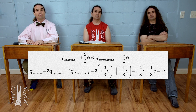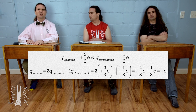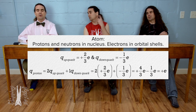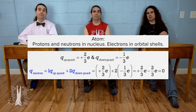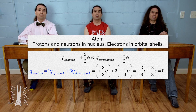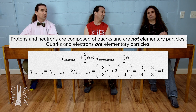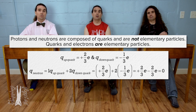What about neutrons? They do not have any charge. Protons and neutrons are in the nucleus of the atom with electrons in orbital shells. A neutron must be composed of one up quark and two down quarks and therefore have a net charge of zero — that is correct. Protons and neutrons are composed of quarks, so they are not elementary particles. However, quarks and electrons are elementary particles.